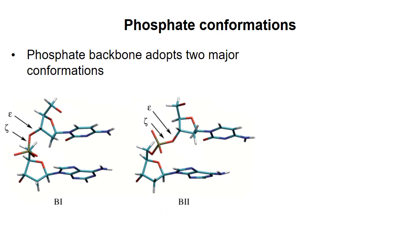If you compare the two structures you can see that rotation around these two bonds affects the positions of the nitrogenous bases. A research group looked at the backbone conformations of dinucleotides in a group of crystal structures to see whether a correlation existed between dinucleotide identity and backbone conformation.